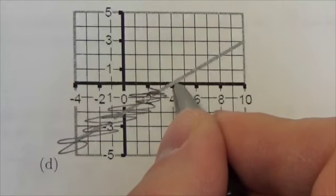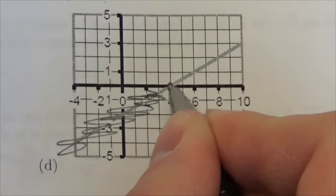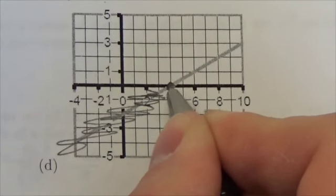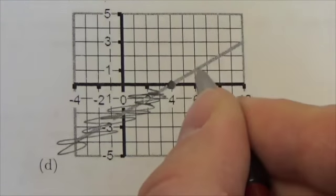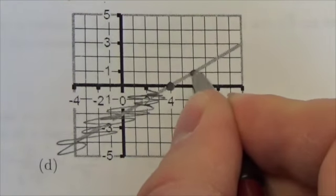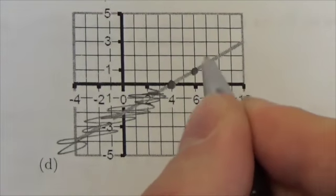My invariant points are going to be here on the x-axis because the y-coordinate here is 0 and the square root of 0 is 0. It's also going to be over here where y equals 1 because the square root of 1 is 1.